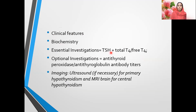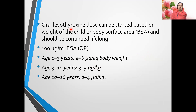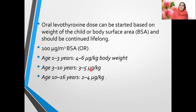Essential investigations for acquired hypothyroidism: TSH plus total T4, and later free T4. Optional investigations include antithyroid peroxidase antibodies, antithyroglobulin antibodies, thyroid ultrasound if necessary for primary hypothyroidism, and MRI brain for central hypothyroidism. Oral levothyroxine can be started based on weight or body surface area (100 micrograms per meter squared), or by age: 1–3 years: 4–6 mcg/kg/day; 3–10 years: 3–5 mcg/kg/day; 10–16 years: 2–4 mcg/kg/day. Note that congenital CH requires 10–15 mcg/kg/day, higher than acquired hypothyroidism doses.